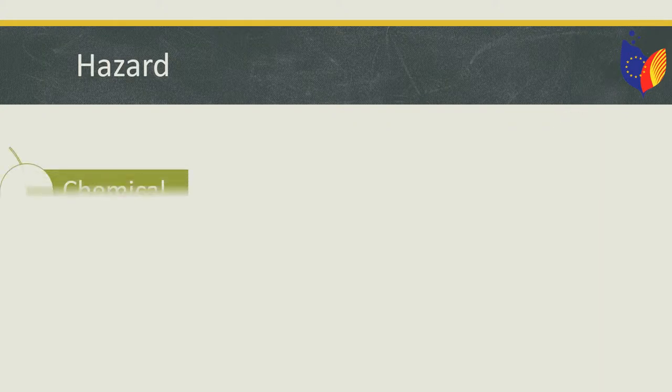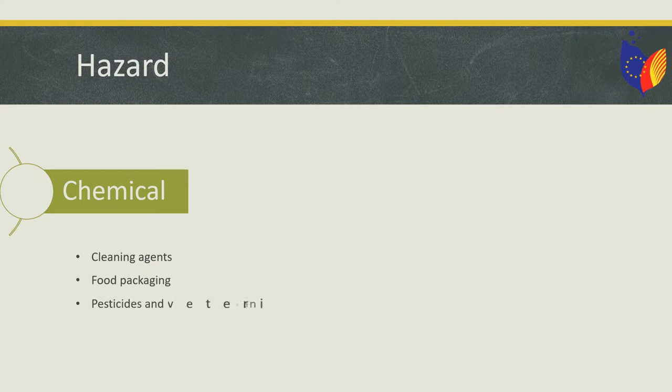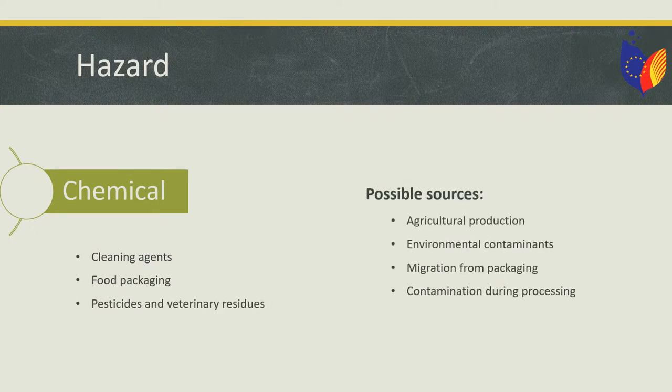Some examples of chemical hazards are cleaning agents, food packaging, and pesticides and veterinary residues. While some possible sources of chemical hazards are pesticides and veterinary residues arising from agricultural production, environmental contaminants, migration from packaging and contamination during processing, which includes residues of cleaning detergents and sanitizers.